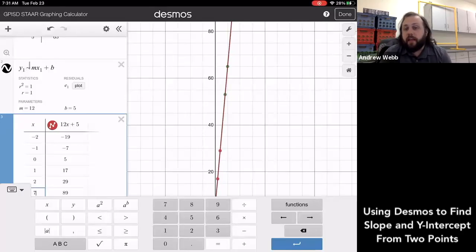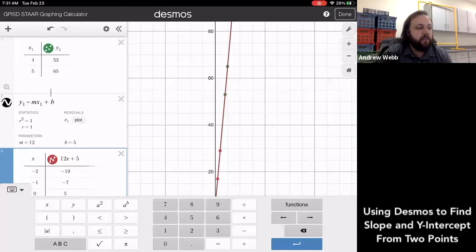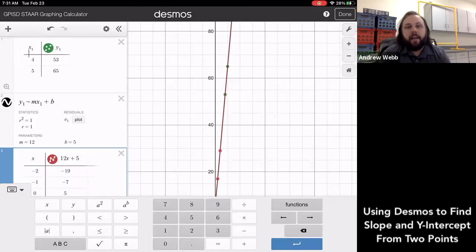So this can be used any time that you have two points. So however you need to get those two points, you can plug those two points into a data table like this. And from that you can get slope, you can get y-intercept, you get the formula for the line, all of that information.